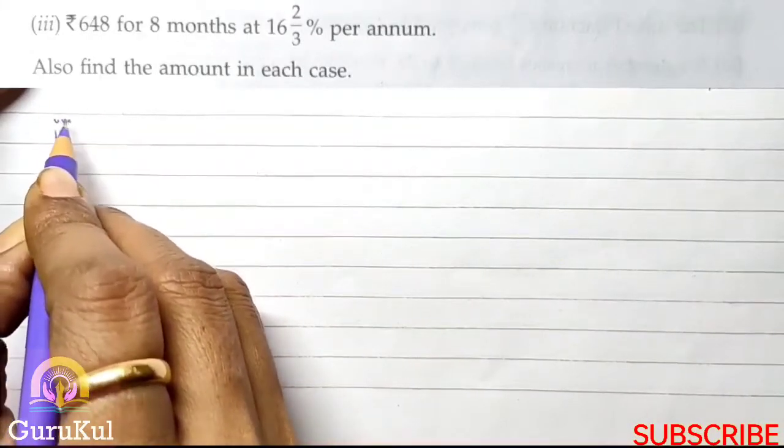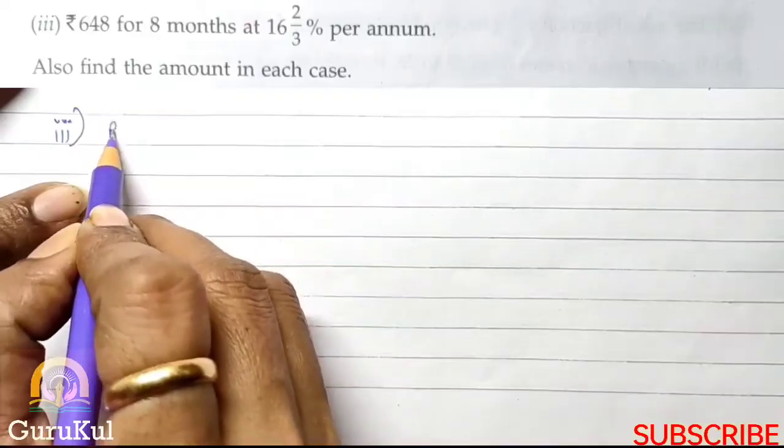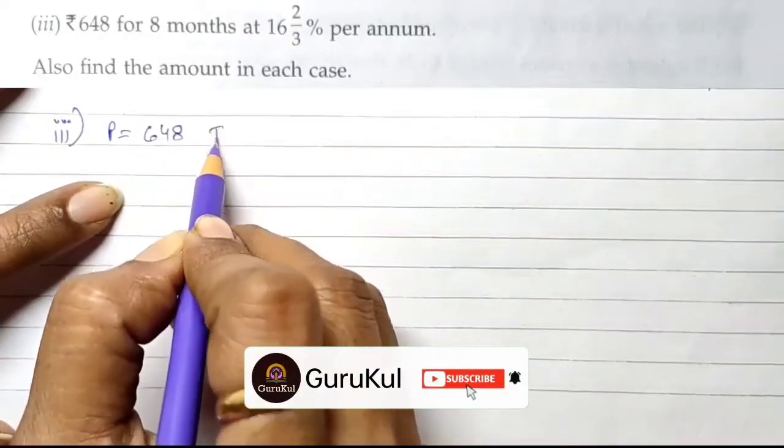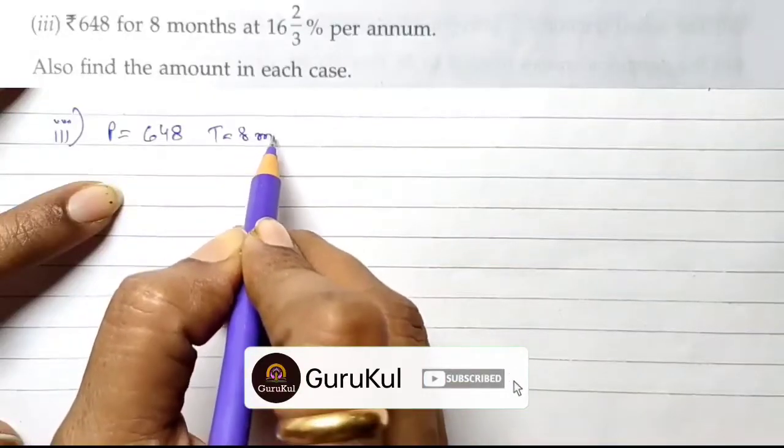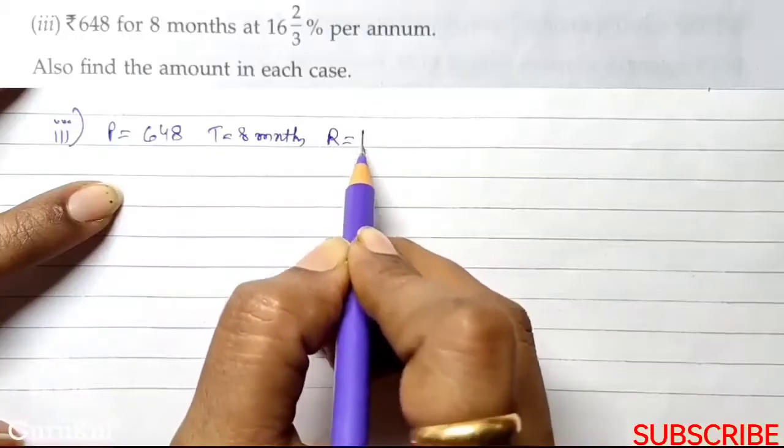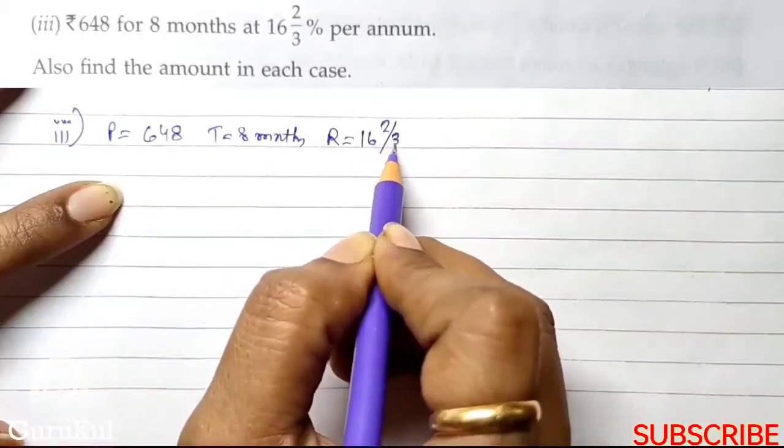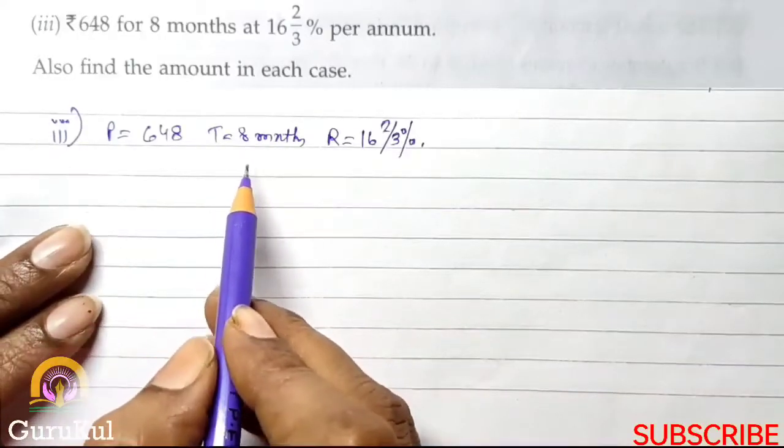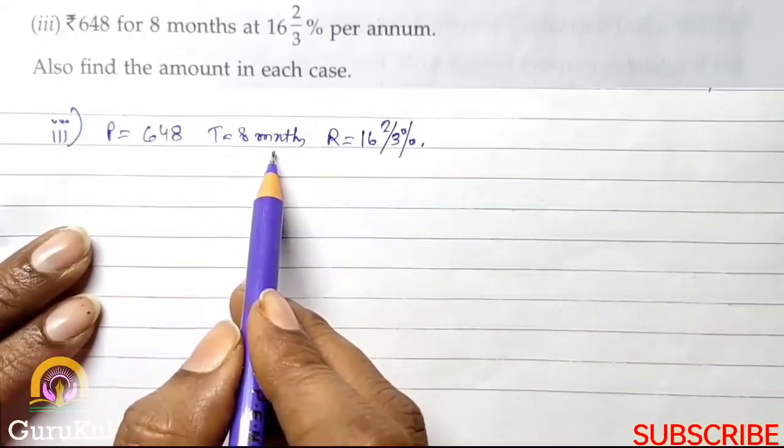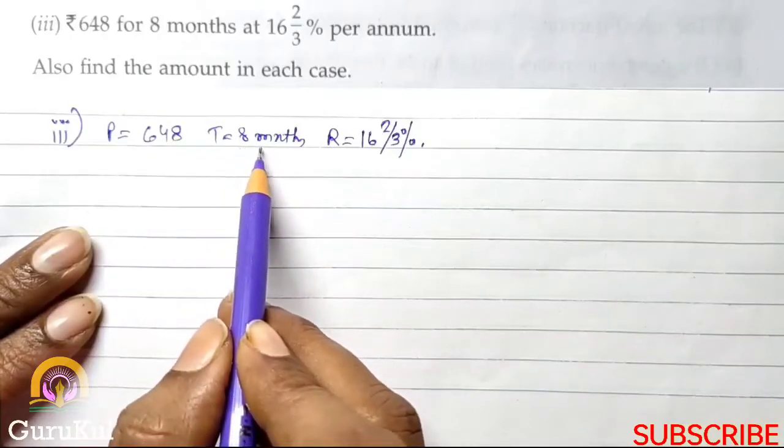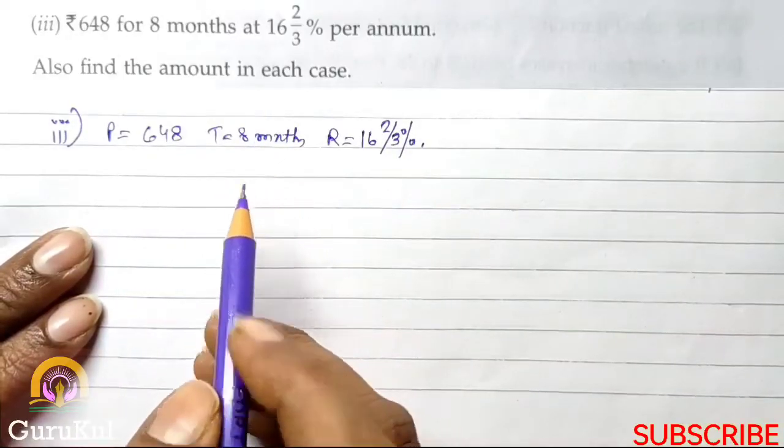Now, the third part of question number 1 is, principal mentioned is 648, time is 8 months and rate is 16 2/3 percent. First see here, time is mentioned in months, which usually is in years, so we have to convert months to year.